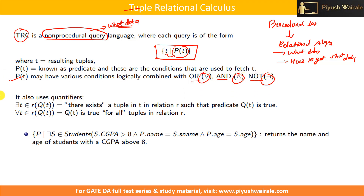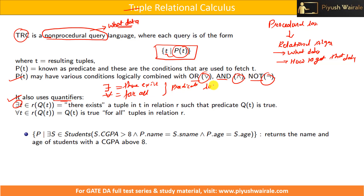In the case of TRC, we have two more operators, or we can say quantifiers. The first one is 'there exists' (∃) and the second is 'for all' (∀). This is basically based on predicate logic. We are already discussing propositional logic and predicate logic in our AI course, so you can watch those videos — it will be helpful to understand these annotations.